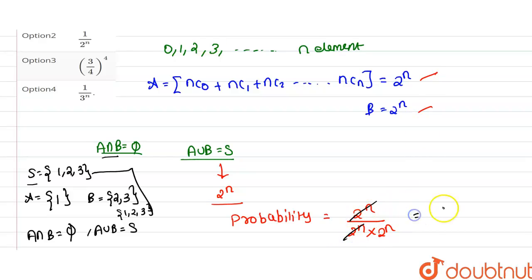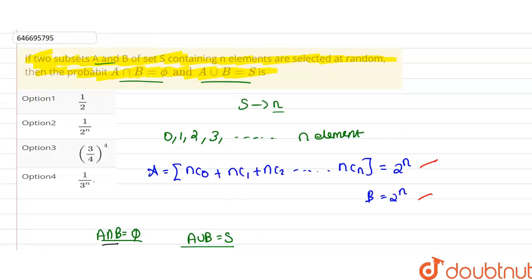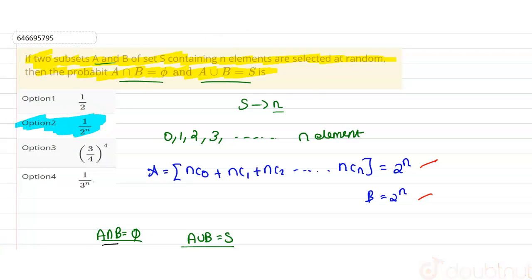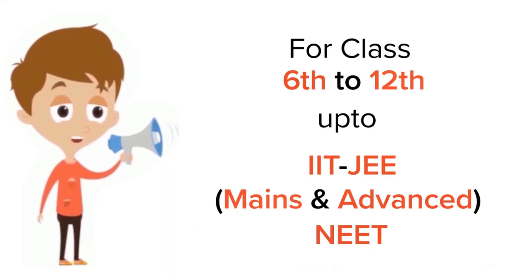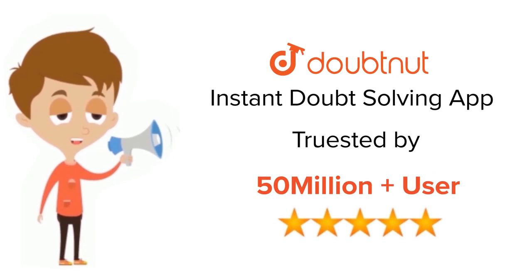Since A is 2 power n and B is 2 power n, the 2 power n terms cancel, giving us 1 by 2 power n. This is our required probability. Checking the options, option 2 is the right answer: 1 by 2 power n.